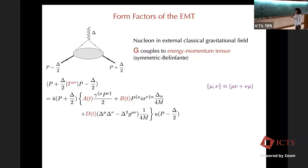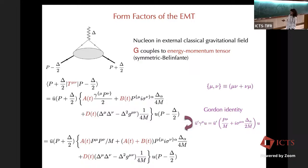Using the Gordon identity: instead of gamma matrices, you take P-mu and this combination with sigma matrices. You have the A form factor with P-mu, and an additional contribution adding to the B form factor. The two parameterizations are completely equivalent, related just by the Gordon identity — in the papers you find one or the other. Now we start from this relation and consider how the momentum sum rule is related to the A form factor.